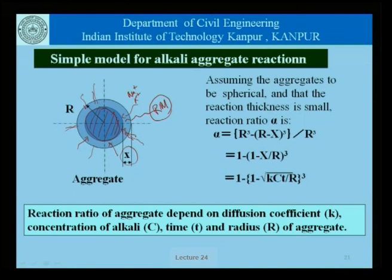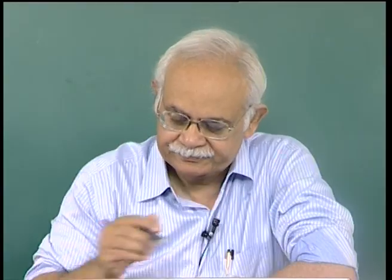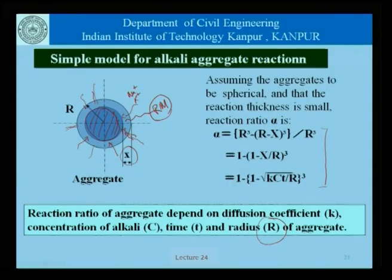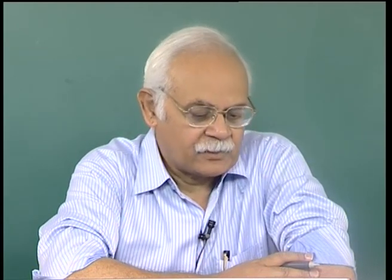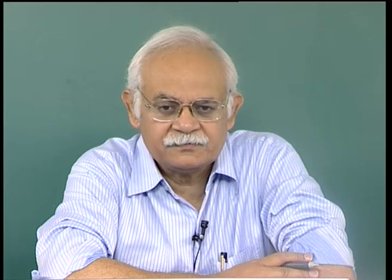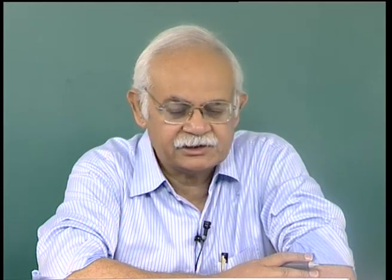This reaction ratio of aggregate depends upon the diffusion coefficient k, the concentration of alkali c, the time t, and the radius of the aggregate. This mathematical formulation defines the reaction ratio — essentially how much of the aggregate has reacted with respect to the original aggregate size. We can understand that the size of the aggregate is a very important determinant as far as the amount and extent of the reaction is concerned.